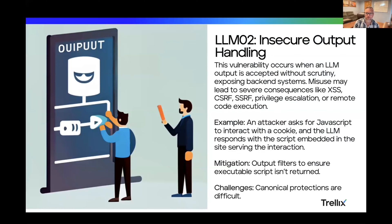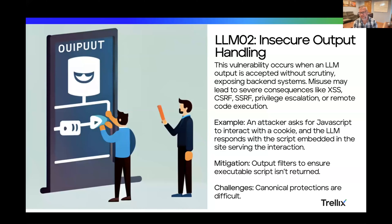Number two is insecure output handling. It's similar, but on the other way around. An attacker could use JavaScript — instead of displaying an answer on the page, it would do something like cross-site scripting, where it would actually alter the page itself and perhaps give it more permissions than it should. The mitigation is to filter that output, but again, it's really hard because your filter has to entirely understand what that looks like and what it does.